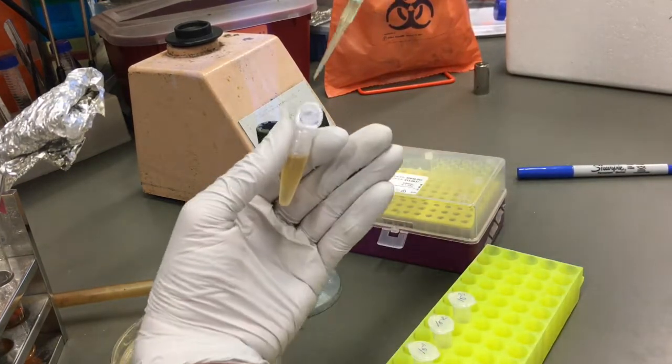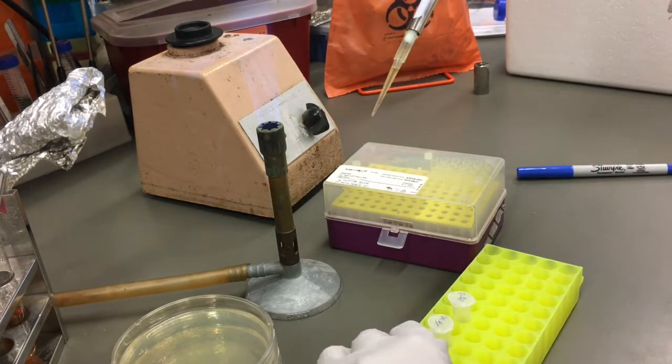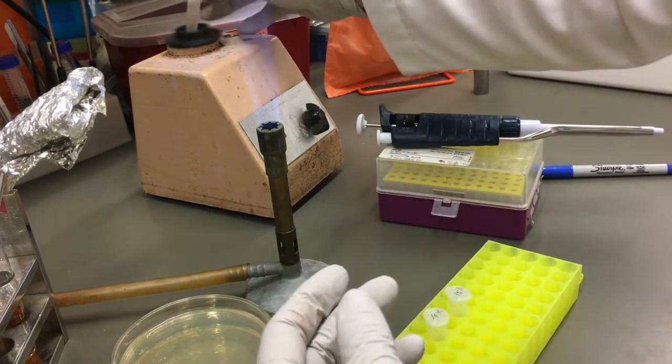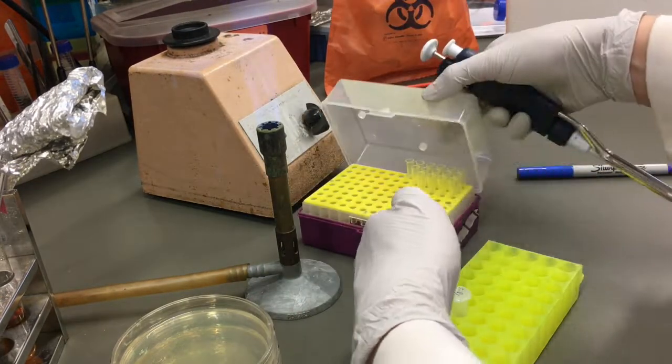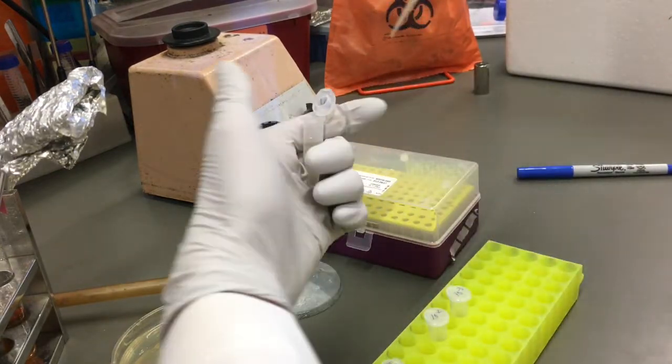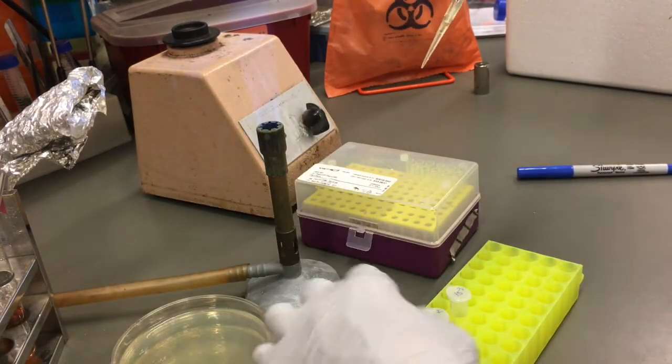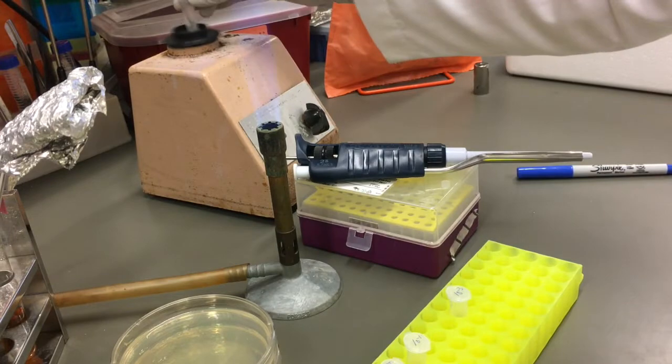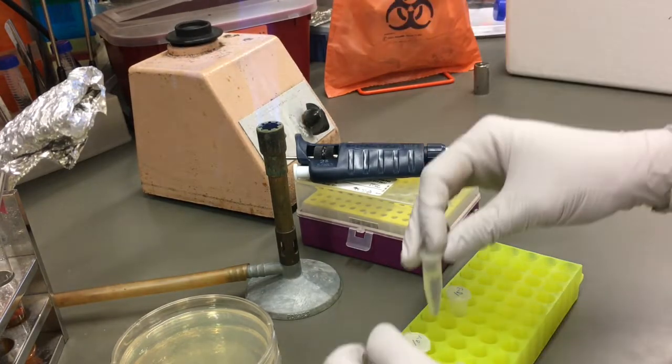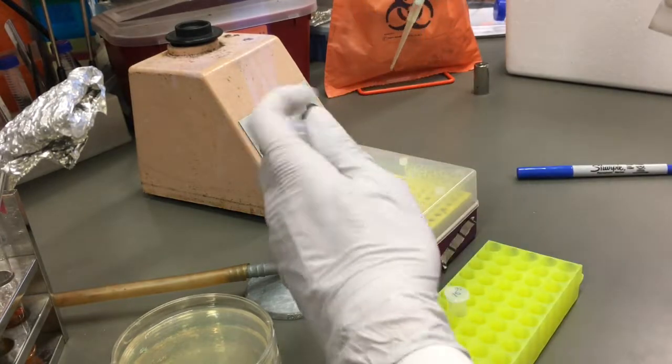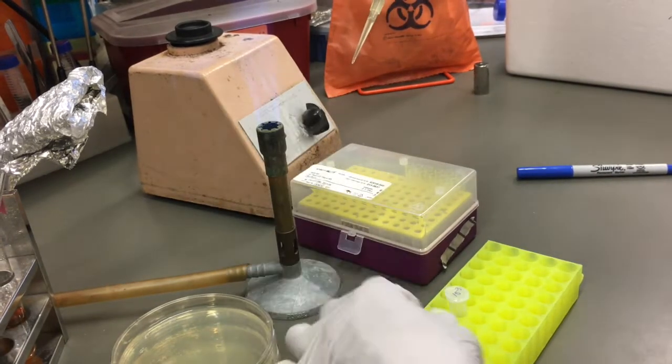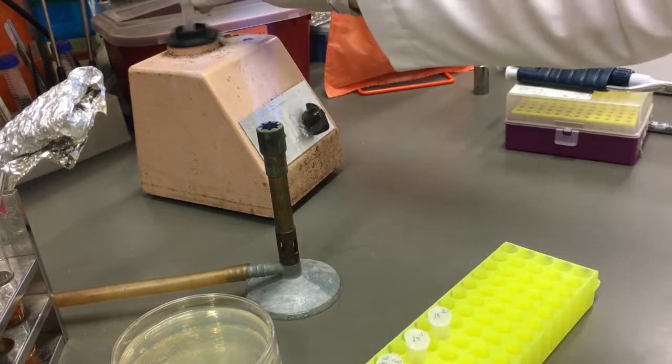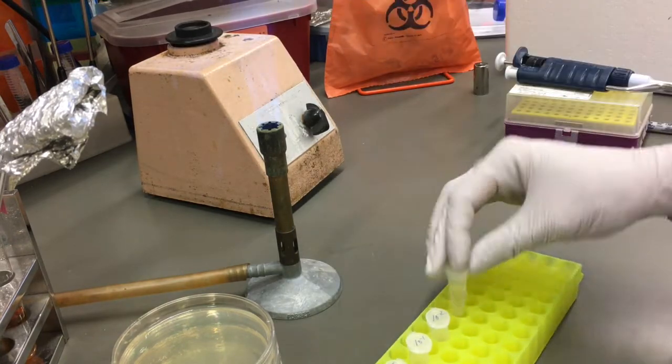You're going to pipette 100 microliters from tube one and transfer it to the 900 microliters of media dilutant in tube two. Dispose of the pipette tip into the biohazard bag and then vigorously vortex tube two. Now, you're going to transfer 100 microliters from tube two and transfer it into tube three that contains 900 microliters of media. Vigorously vortex tube three. And now you're going to pipette 100 microliters from tube three and transfer it to the 900 microliters of media in tube four. So, every time you've done these transfers, you've done a dilution of one in ten, or a dilution factor, which is the inverse of the dilution, which is ten.